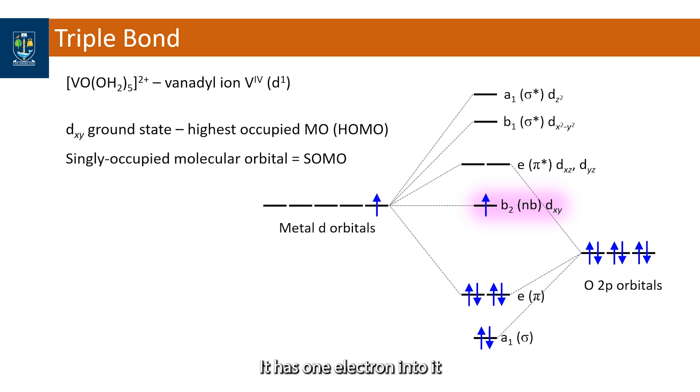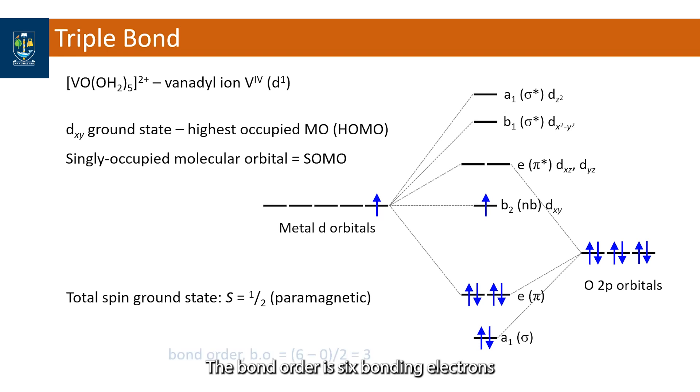The highest occupied molecular orbital is dxy. It has one electron in it and so is called the SOMO. This gives a total spin ground state of s equals one half for this complex ion. The bond order is six bonding electrons minus zero antibonding electrons divided by two giving three. It is a triple bond between the vanadium and the oxo.